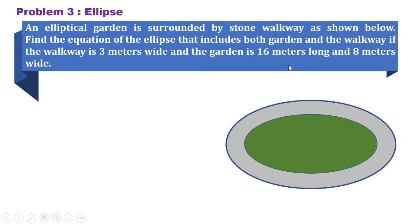For problem number 3, let's say we have an elliptical garden surrounded by stone walkway. It is given in the problem that the garden is 16 meters long. So we can say that if we look at this on the Cartesian plane, this is at (8, 0) and at (negative 8, 0). And 8 meters in width would be (0, 4) and this would be (0, negative 4). Since the stone walkway has a width of 3 meters, we can say that this point would be at (11, 0) and this would be at (negative 11, 0). Same sense here, this would be, we're going to add 3 to locate this point and that would be (0, 7) and (0, negative 7).